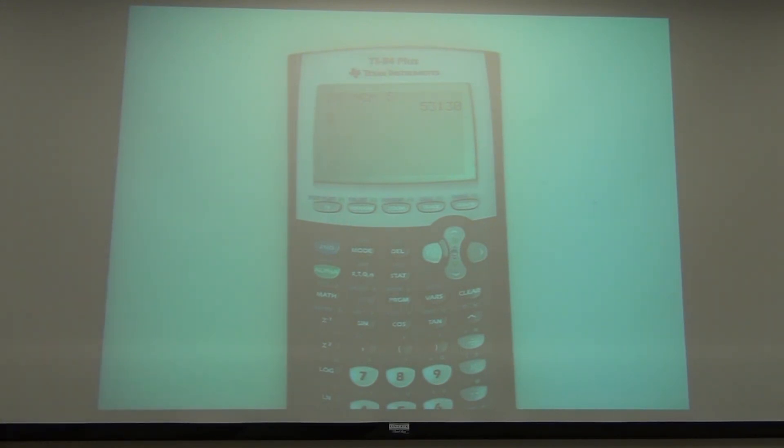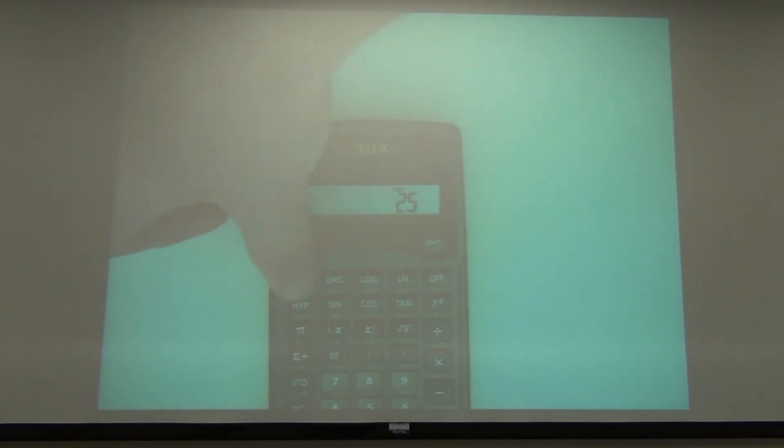If you want your handheld calculator, the scientific one, it's the same basic idea. We do our 25. On this case, you had to press the second button to get down to your NCR, which is above the number eight. And then we press our five, but we'll get the same exact answer.